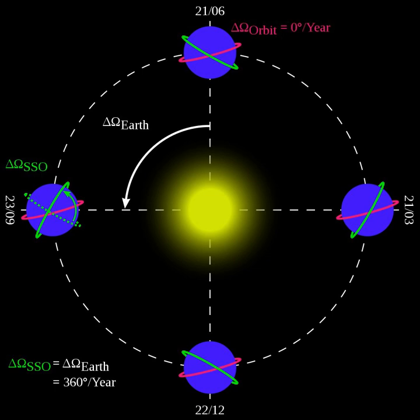The dawn-dusk orbit has been used for solar observing scientific satellites such as YOHKOH, TRACE, HINODE and PROBA-2, affording them a nearly continuous view of the sun.